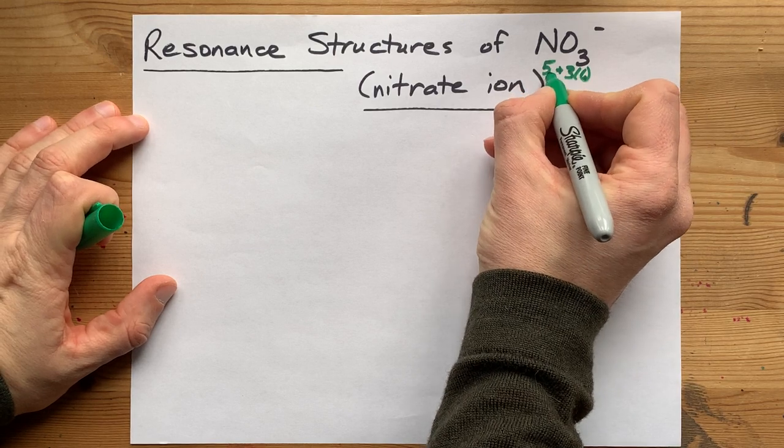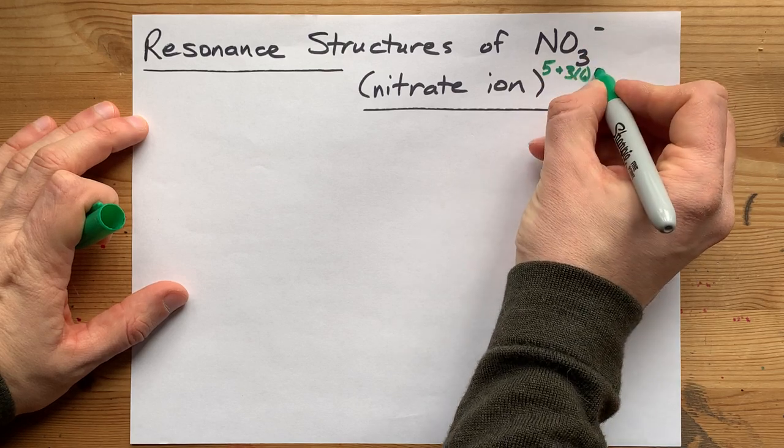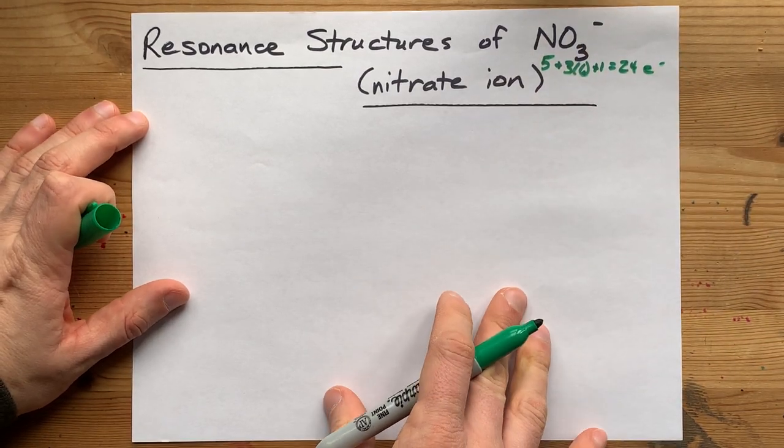Along with the 5 of nitrogen and the 1 extra electron that this minus charge represents, give us 24 electrons total for this Lewis structure.